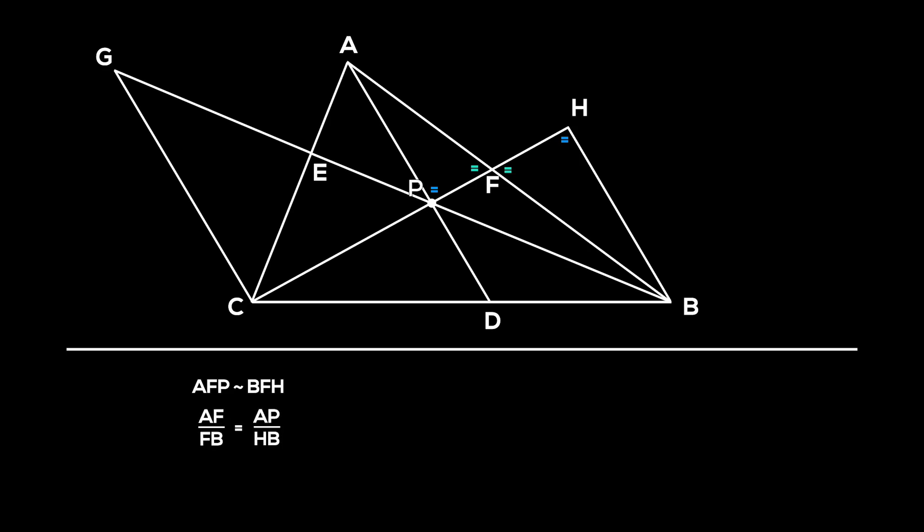Thus, AF over FB is equal to AP over HB. Next, angles CHB and CPD are equal as they are corresponding angles, and angle HCB is equal to PCD. Thus, triangles PDC and HBC are similar, and we obtain the relation BC over DC is equal to HB over PD.